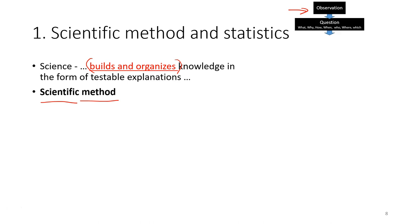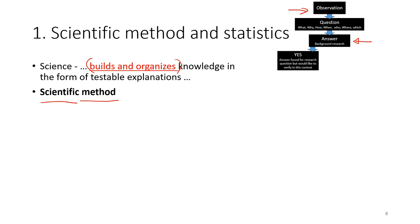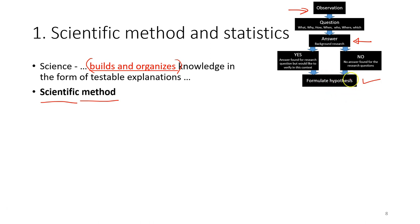From the observations, we could ask questions, and then we look for answers — this might require a lot of reading from the literature. It's possible we could find an answer that explains the phenomena or the observations. Sometimes we cannot find the answer, or the answer is not sufficient, so in this case we formulate a hypothesis. The hypothesis is a number of different expected explanations, and based on the hypothesis we formulate a research objective.